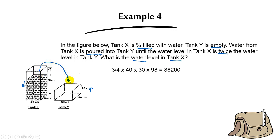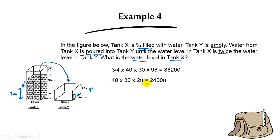After the transfer, the water level in tank X drops and the water level in tank Y rises. We want the water level in X to be twice the water level in Y. So if the water level in X is two units, the water level in Y will be one unit. We take 40 times 30 times two units to find the amount of water in tank X after the transfer.